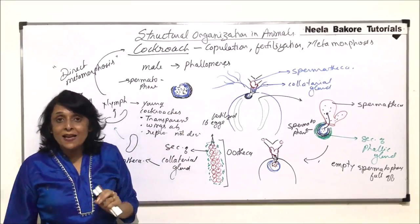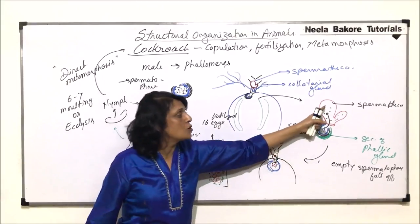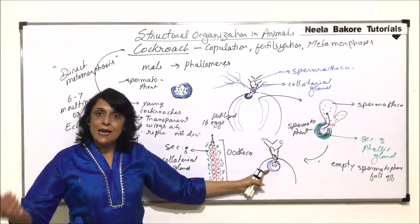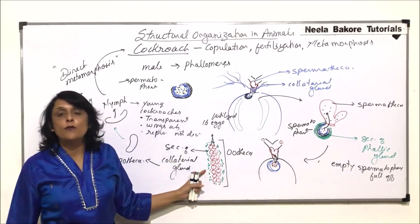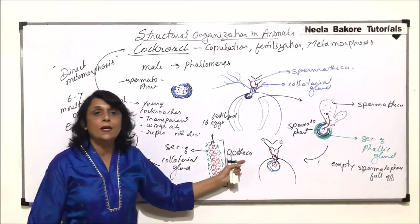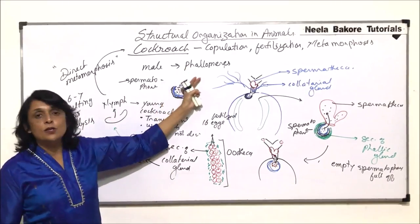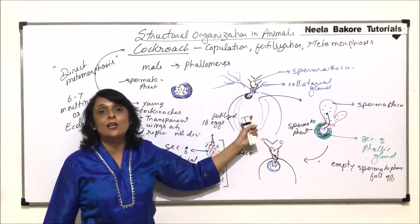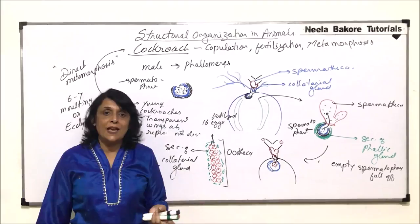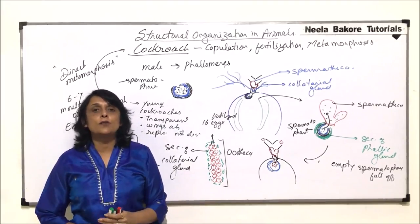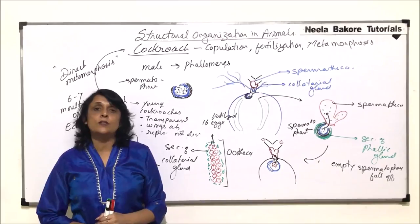In summary: copulation takes place where the male deposits sperms packed into spermatophores; the sperms get stored in the spermatheca; when the egg is released, sperms are also released and the eggs are arranged in rows; the secretion of the collateral gland hardens the outer cover and the ootheca is formed; inside the ootheca the young ones develop and a nymph hatches. Fertilization takes place in the genital sac and metamorphosis is direct. With this, we have completed the complete life cycle of cockroaches and discussed various systems. The next animal we will start with is the frog.